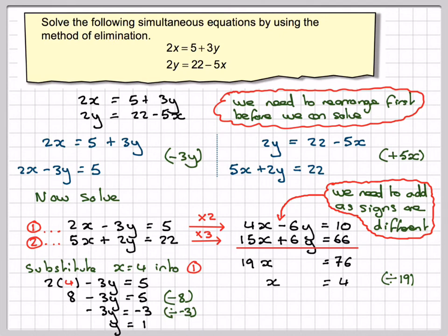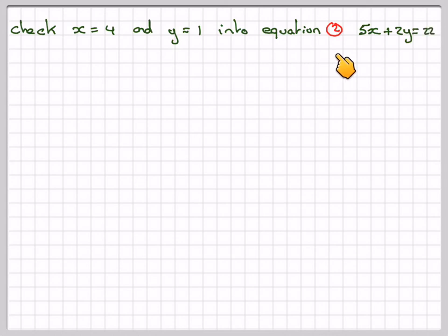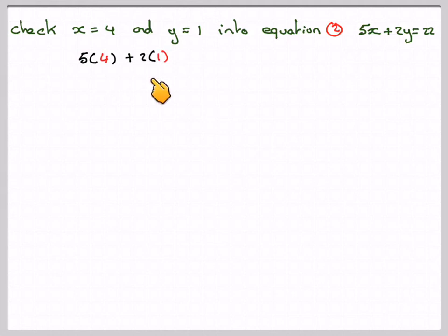Then we should check in the equation we didn't use — so we're going to check x is equal to 4 and y is equal to 1 into equation 2. Equation 2 was 5x plus 2y is equal to 22. So we do 5 times 4 plus 2 times 1, giving 20 plus 2, which makes 22. And that's what we wanted it to be.